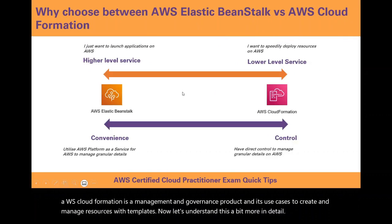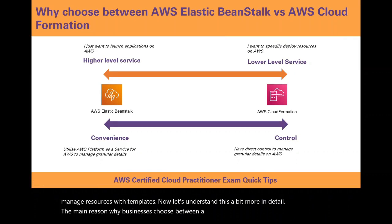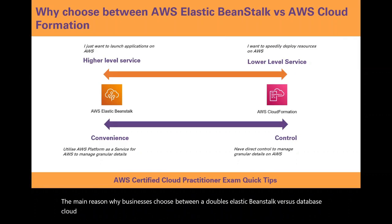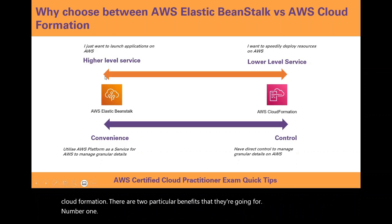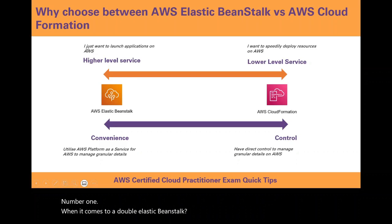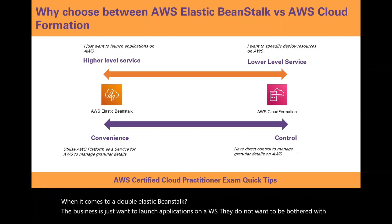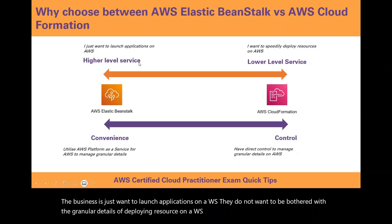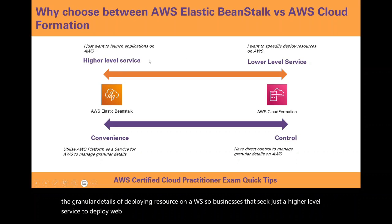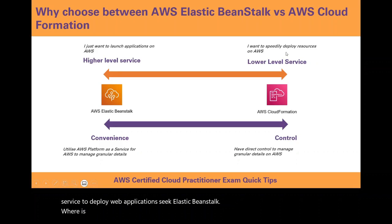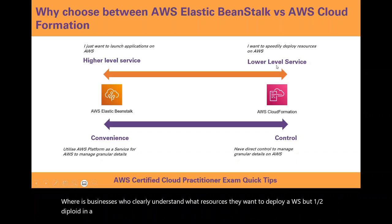The main reason why businesses choose between AWS Elastic Beanstalk versus AWS CloudFormation comes down to two particular benefits. Number one, when it comes to AWS Elastic Beanstalk, businesses just want to launch applications on AWS — they do not want to be bothered with the granular details of deploying resources on AWS. Businesses that seek just the higher-level service to deploy web applications seek Elastic Beanstalk. Whereas businesses who clearly understand what resources they want to deploy on AWS but want to deploy it in a faster manner are seeking a lower-level service, for which they seek AWS CloudFormation.